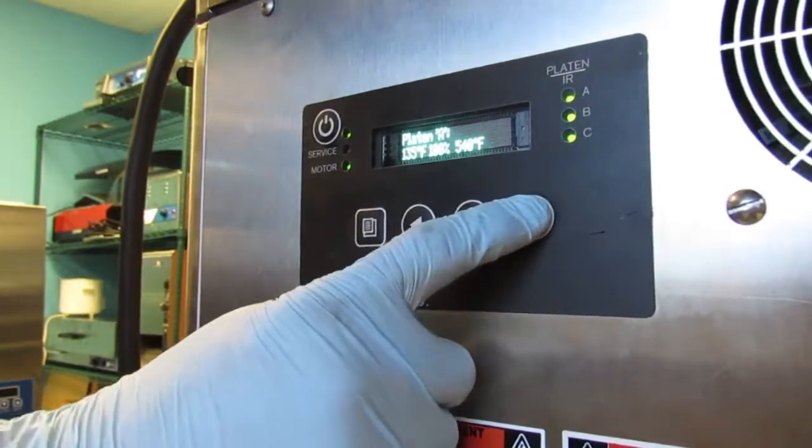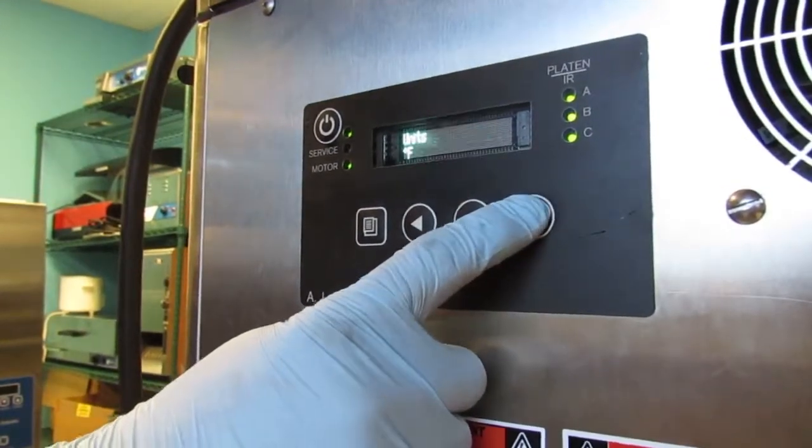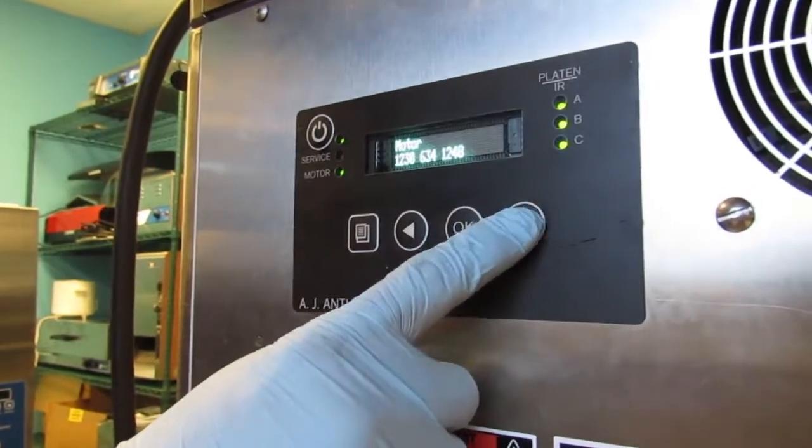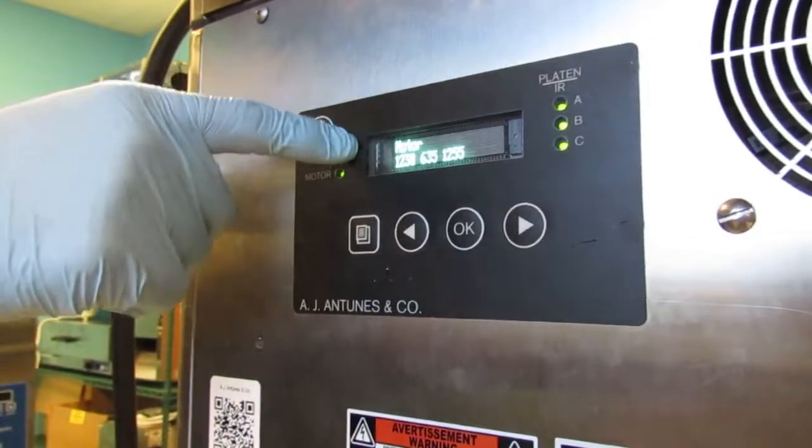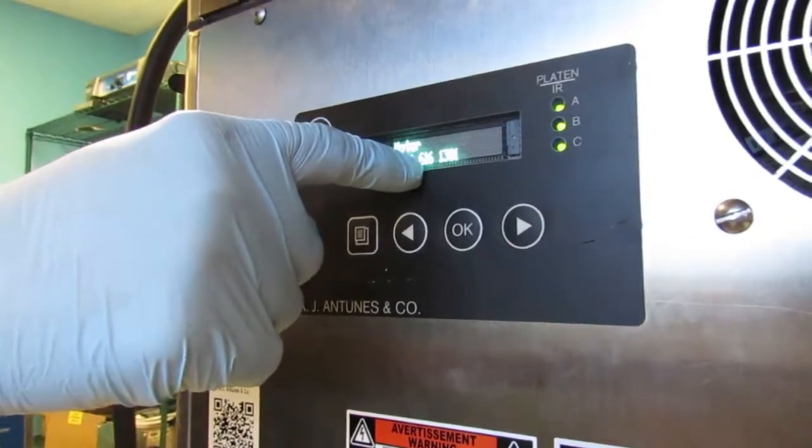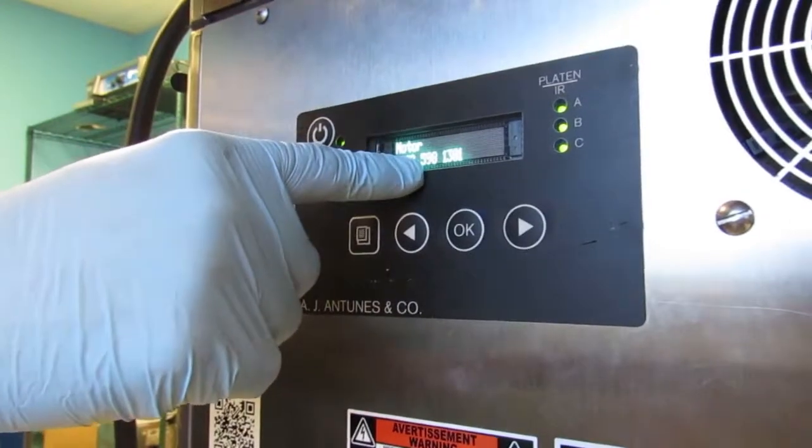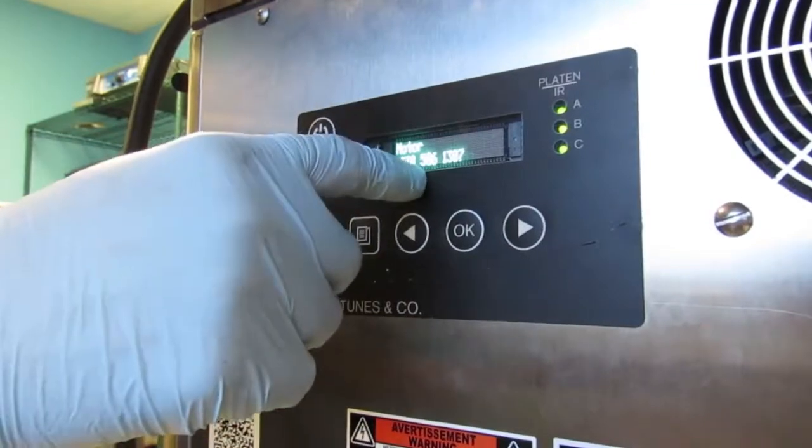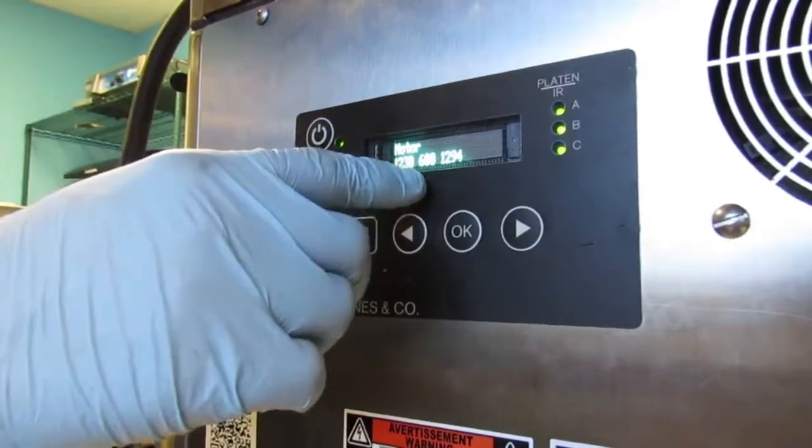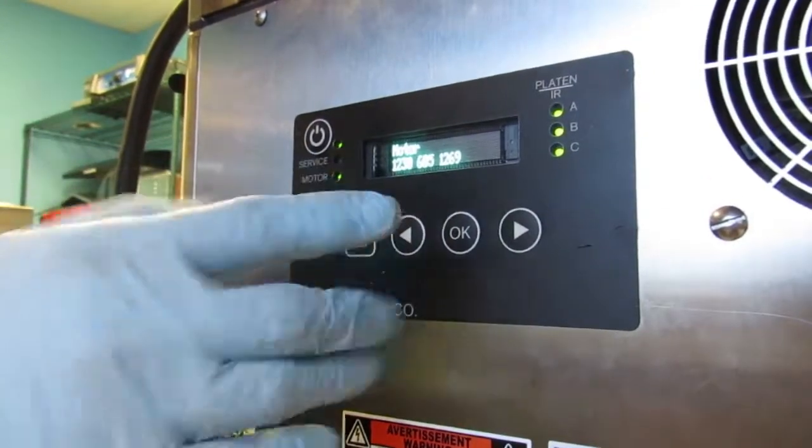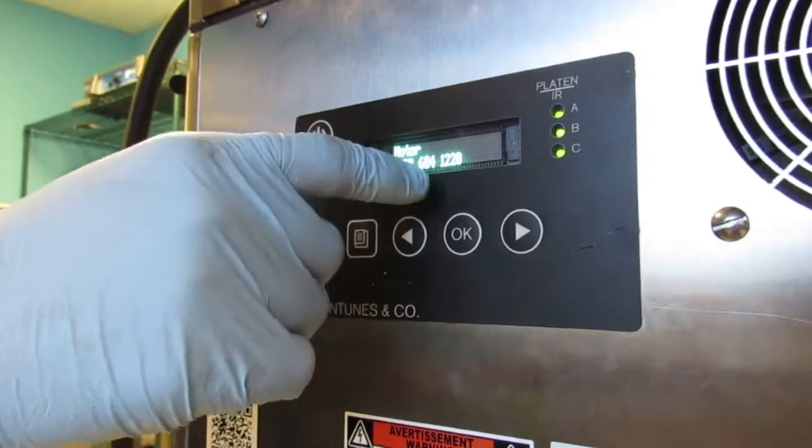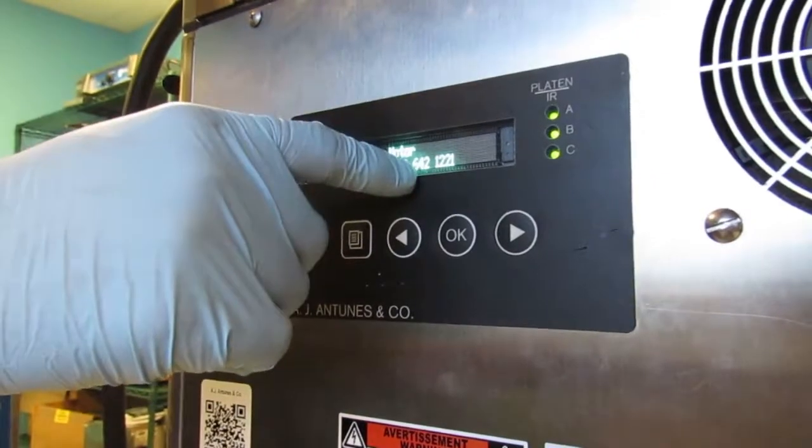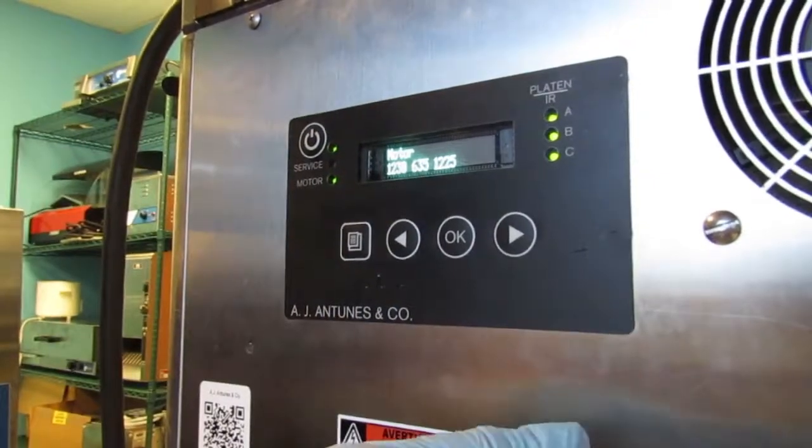Push and release the right arrow eight times until motor values appear. The center numerical value represents the drive motor drag load. It should be between 550 and 650, fluctuating, not to exceed 700. If the value is within that range, the drive chain tensioning is okay.